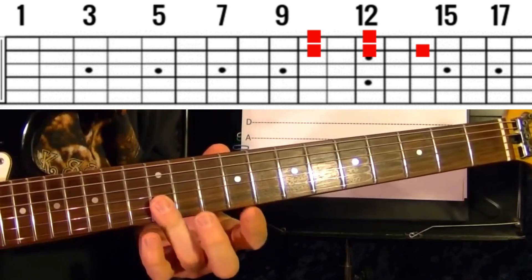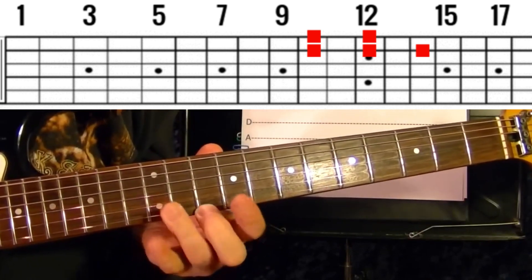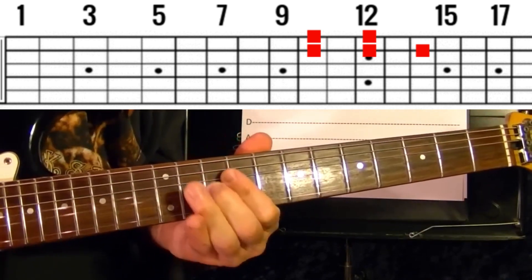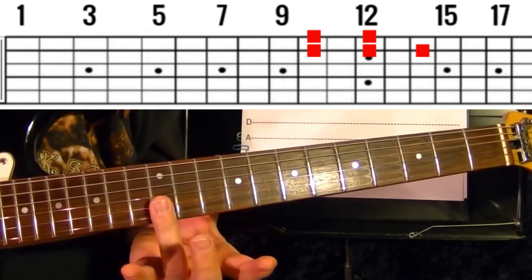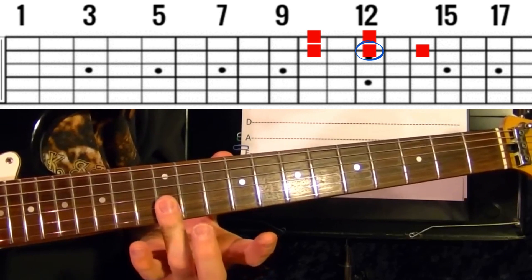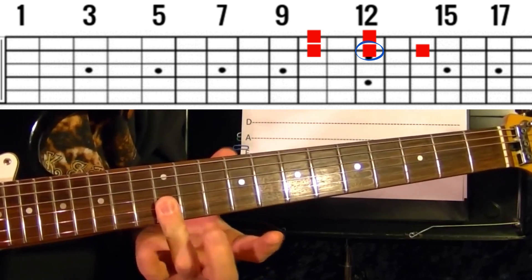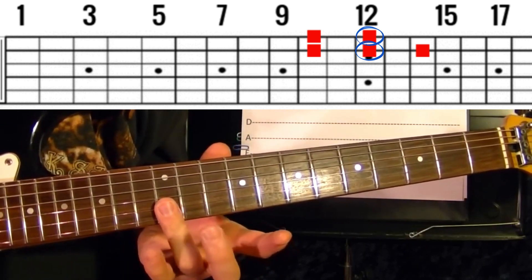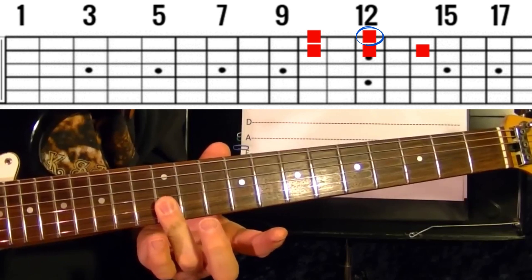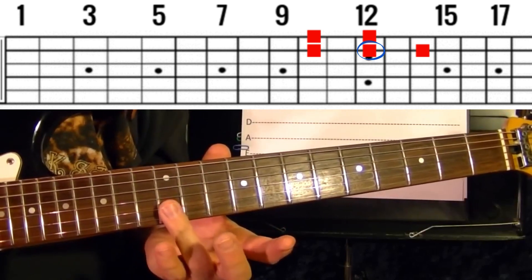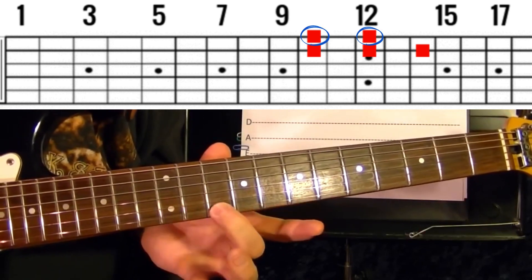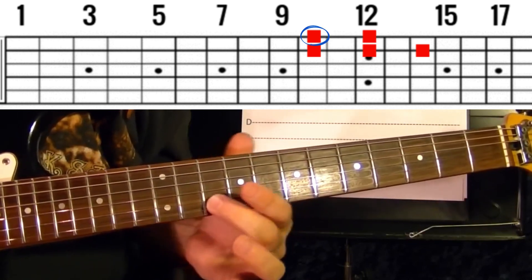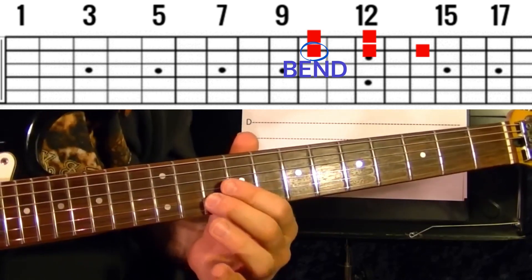Next part is this: second string twelfth fret, first string twelfth fret, then 10th fret, second string 10th fret bend up.